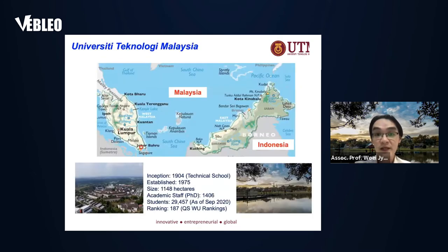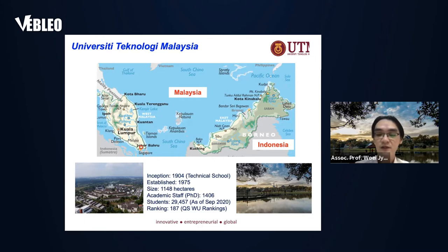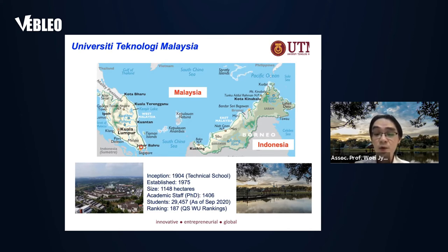Before I proceed further to my technical presentation, I will briefly introduce my university. UTM is one of the five research universities in Malaysia. The main campus is located at the southern part of the peninsula in Malaysia, which is very close to Singapore. It started as a technical school in 1904 before it was upgraded to a university in 1975. Currently we have 1,400 lecturers with PhD qualification and close to 30,000 students studying master and undergraduate programs. The latest QS World University Ranking places UTM at 187th, which is the best position we have ever achieved.